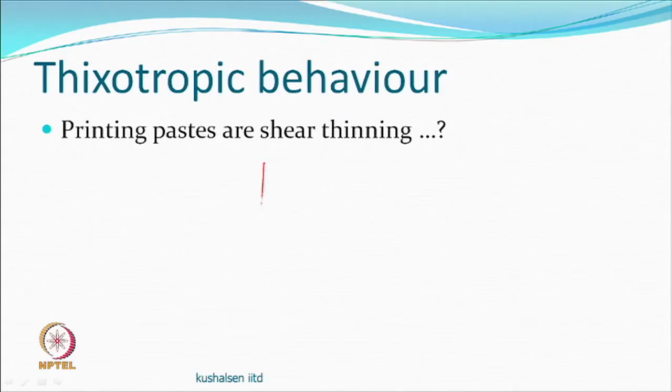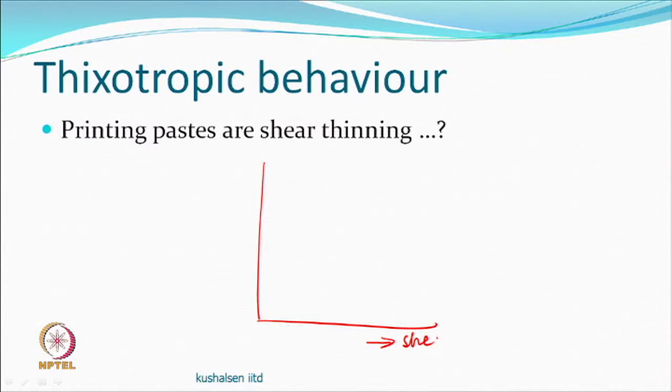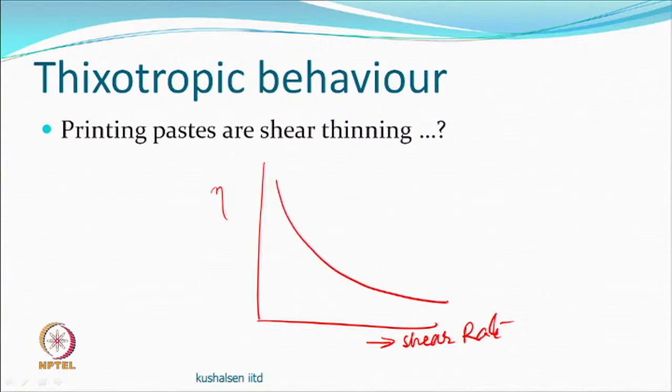Looking at a printing paste and its behavior — we call this rheology. When you increase the shear rate and measure viscosity, you see a drop. This shear-thinning phenomenon is seen in printing paste, in melt-spun polymers, and in wet-spun polymers. It is important because if viscosity does not drop with shear, the force required to push the paste through the holes or pores of the screen will be very high.